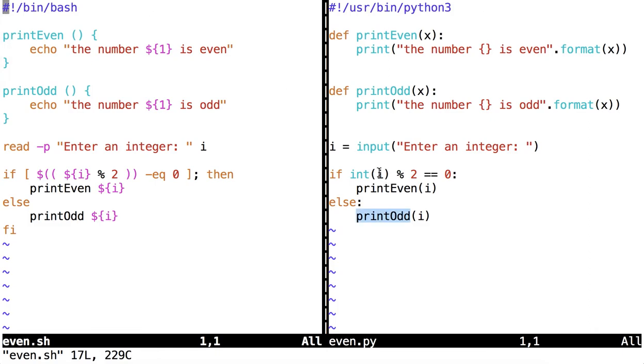Now, one last thing to notice about this block of code in Python, is that I did not just put i mod 2, I put int i mod 2. In other words, I had to cast i to an integer. Can you remember why I had to do this?